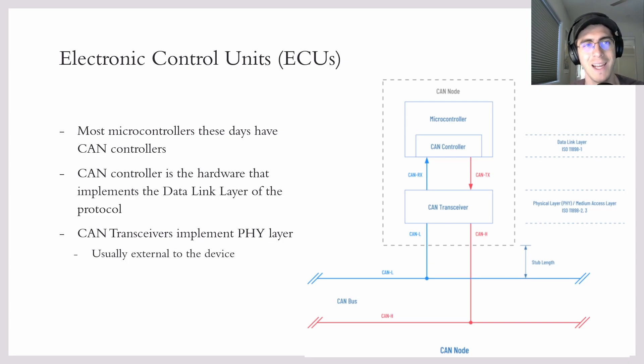So what does the CAN node look like? Well, the CAN node is usually just a microcontroller that has a CAN controller. And the CAN controller is what handles the data link layer of the protocol. So it'll handle the CAN frames, figuring out which ID it is, that sort of thing. And then we have the CAN transceiver, which is the PHY layer of the protocol. And usually, microcontrollers don't actually have CAN transceivers. You need to buy an external device. But most microcontrollers do have the CAN controller.